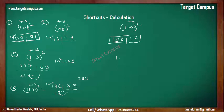One more: 1.16 squared. Forget the dot. 116 is plus 16 from 100. The square of plus 16 is 256. We write 56 here and carry 2. Then 116 plus 16 is 132, plus 2 is 134. We're asked to calculate 1.16, so 4 digits after the dot: the answer is 1.3456.